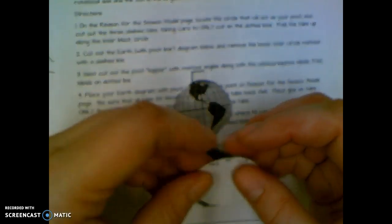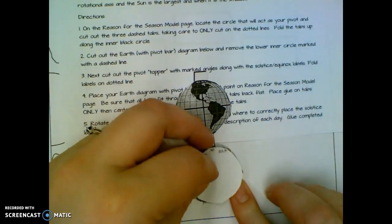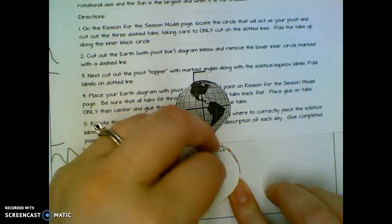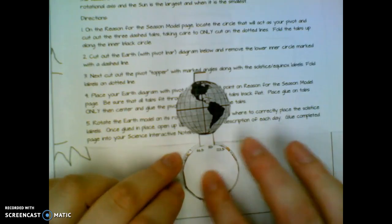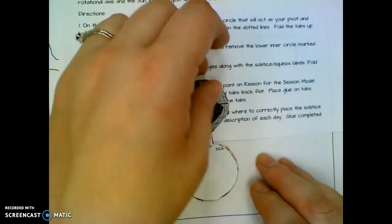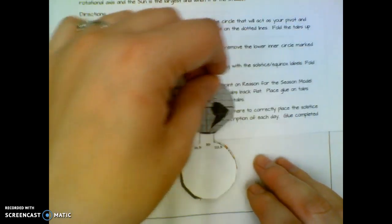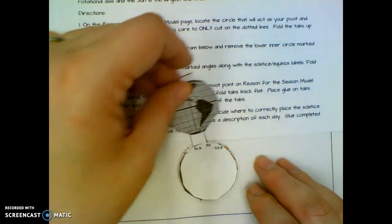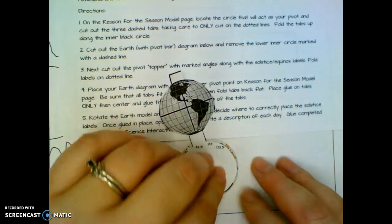So you're gonna place this on top. Make sure you straighten it out so that 90 degrees is in the middle. Just give it a little rub, and then that allows this to move back and forth freely. So this is just glued to the tabs underneath, not to the little gray circle or the earth one itself.